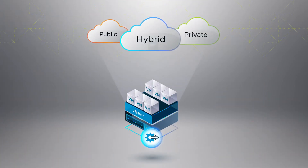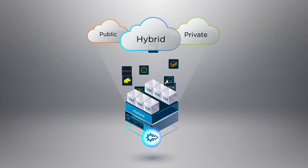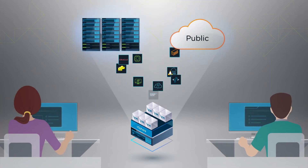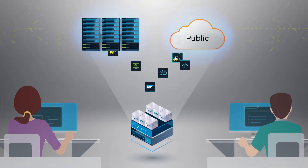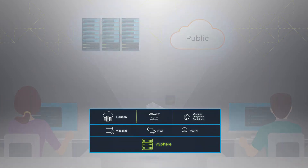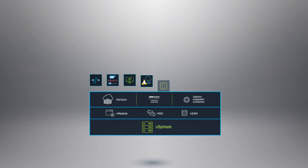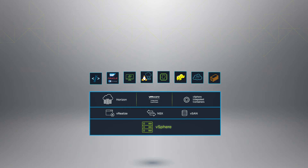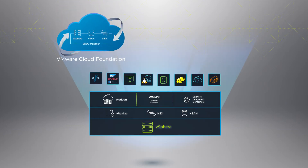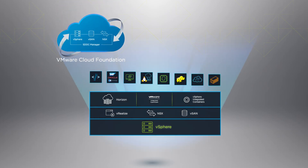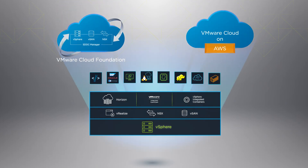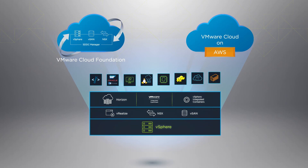With vSphere, you can run apps anywhere — in your own data center or in a public cloud. vSphere is also the universal app platform and core foundation that enables other VMware products and services, including VMware Cloud Foundation and VMware Cloud on AWS.